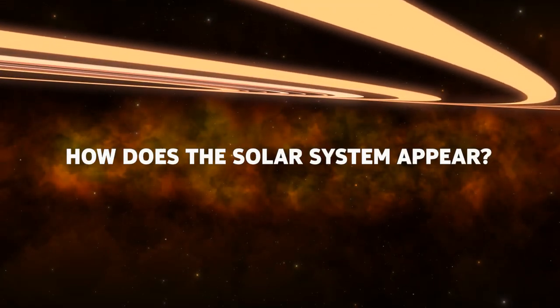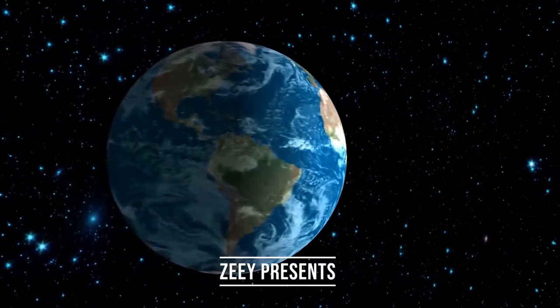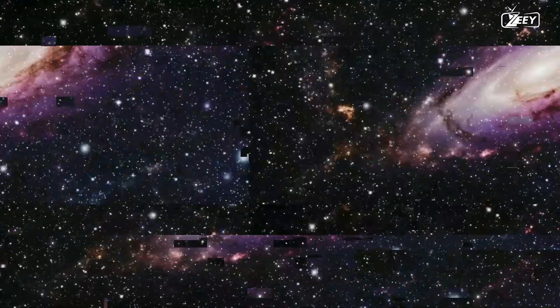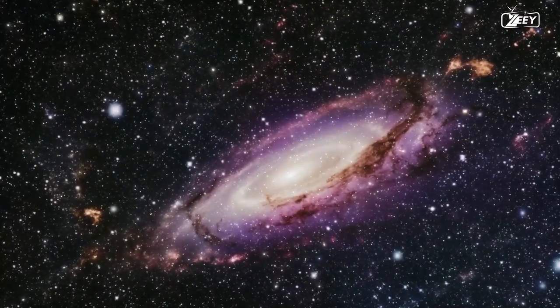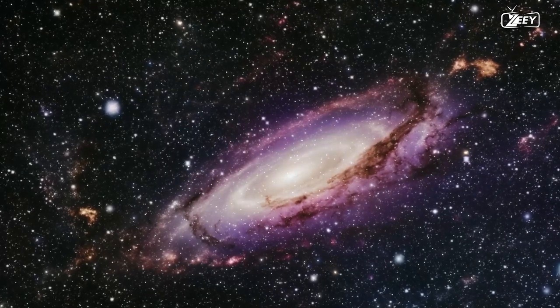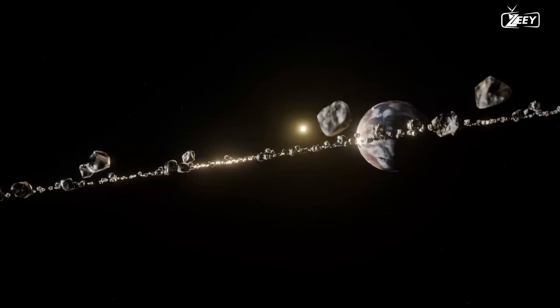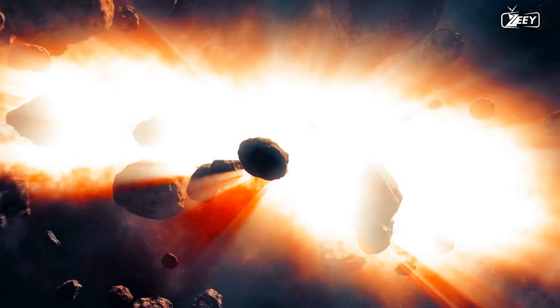How does the solar system appear? Our solar system is the only one that we know of that supports life as we know it, although it is only one of billions of star systems in the cosmos. It comprises one star which we name the Sun, eight planets, billions of asteroids, and billions more comets.